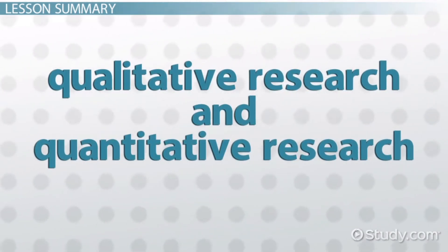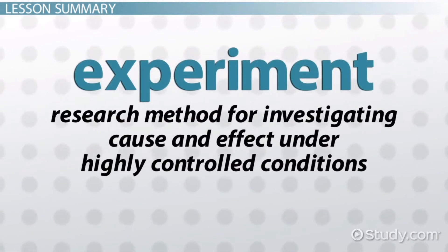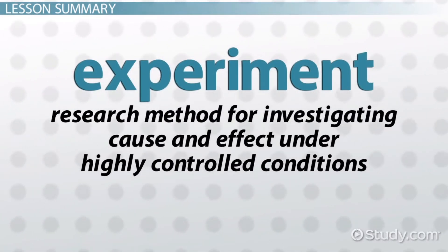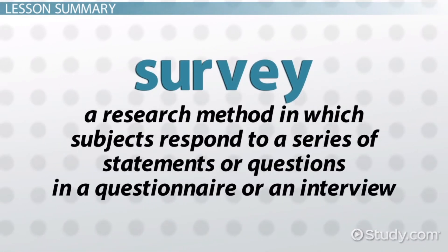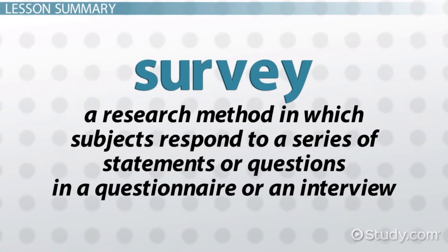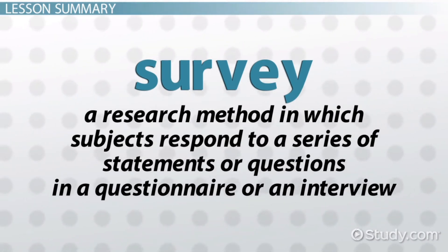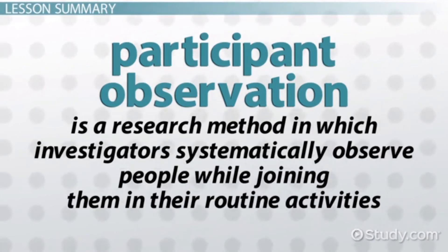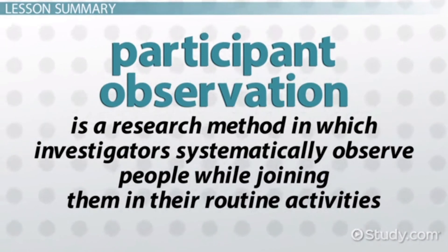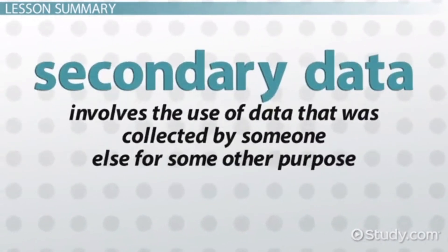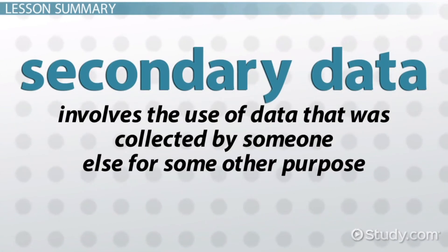In summary, sociologists draw on a variety of both qualitative and quantitative research methods. An experiment investigates cause and effect under highly controlled conditions. A survey has subjects respond to statements or questions in a questionnaire or interview. Participant observation involves investigators systematically observing people while joining them in their routine activities. Finally, secondary data involves the use of data collected by someone else for some other purpose.